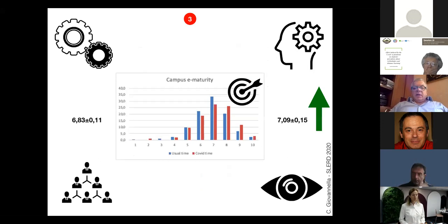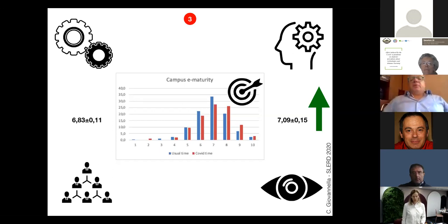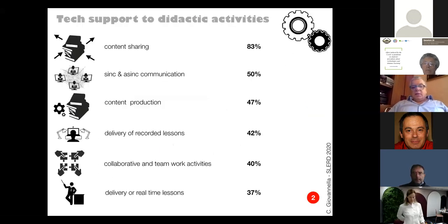The consequence of this can be seen on the evaluation of the e-maturity of the campus. E-maturity is a very complex construct that puts together technological setting, digital competencies, the organization of the institution, and also the vision toward the future. Nevertheless, it is very impressive that in less than one month—the blue data was collected at the starting of the semester in mid-February—just one month after, we detected a very high, relevant increase of the average perceived e-maturity of the campus from 6.83 to 7.09, which is very significant.